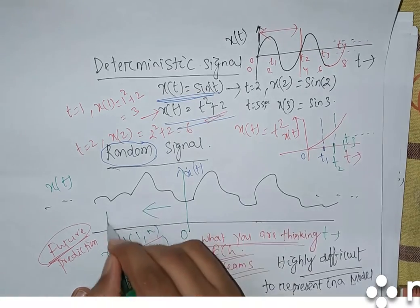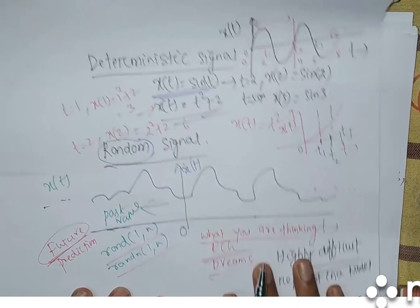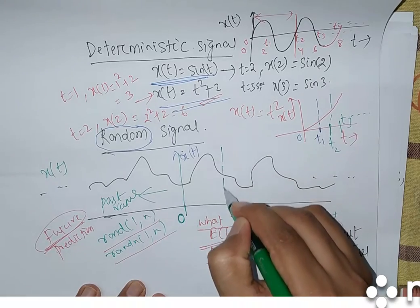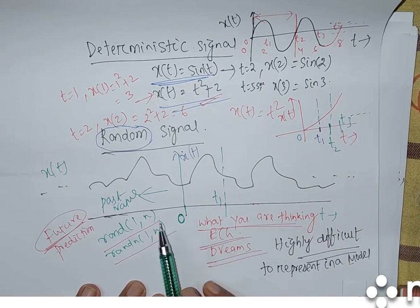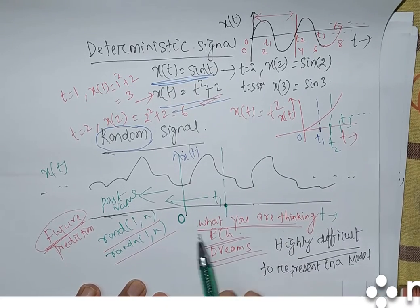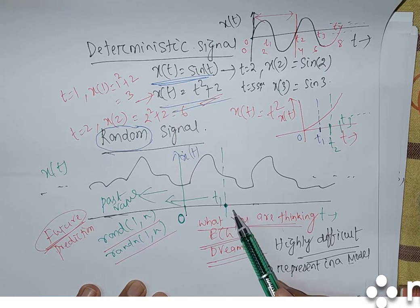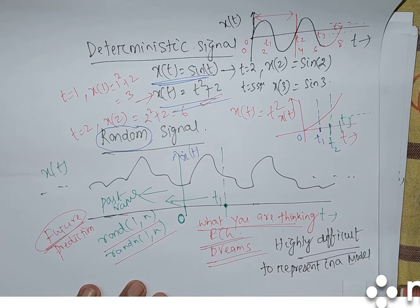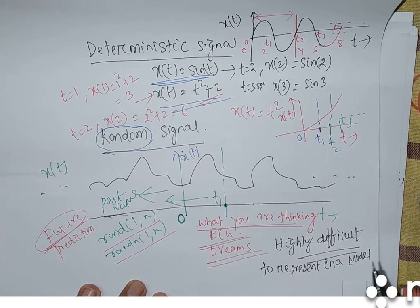Even though you know all past values and the signal up to instant t1, it is difficult or it looks impossible to predict the future value. So this is about random signal — it's highly difficult to represent mathematically, and also highly difficult to extract the information, and also highly difficult to predict the information for future.